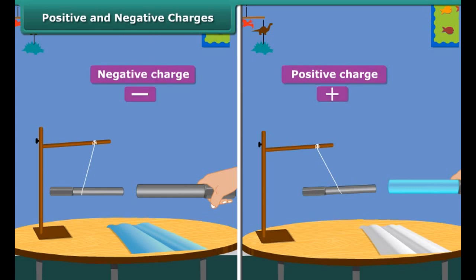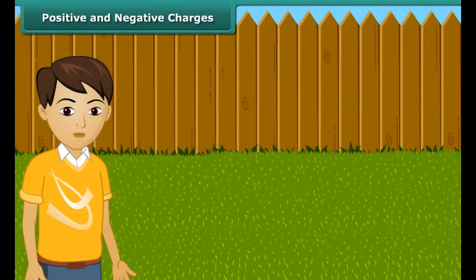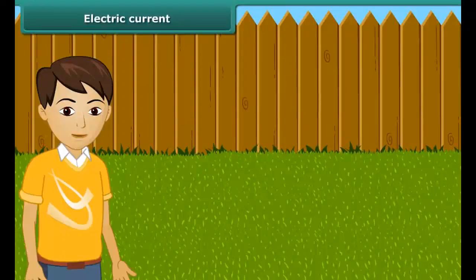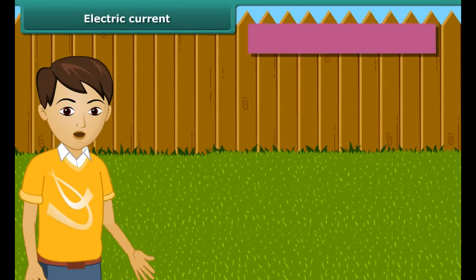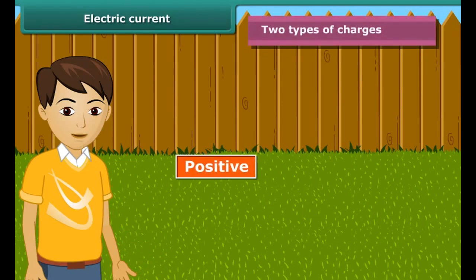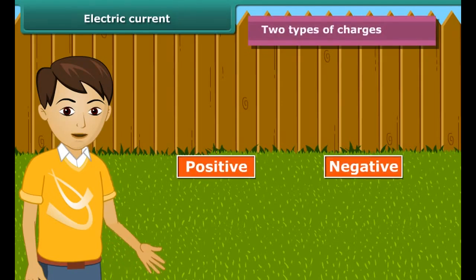These two kinds of charges are called positive and negative charges. The positive charge is shown by the plus sign and the negative by the minus sign. Merely as a convention, charge on a glass rod rubbed with silk is taken as positive, and that of ebonite rod rubbed with woolen cloth is taken as negative. From the earlier activity we can conclude that like charges repel each other and unlike charges attract each other.